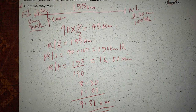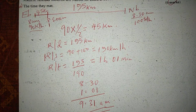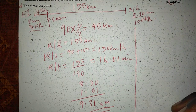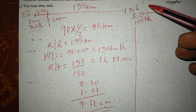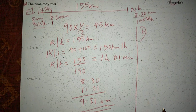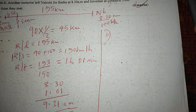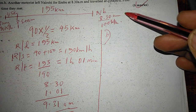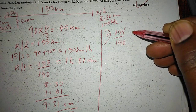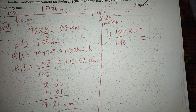The other question being asked, part B, is: find how far they met from Nairobi. We consider the motorist traveling from Nairobi. To get how far they met from Nairobi, we use the time taken to meet and the speed of the motorist traveling from Nairobi.